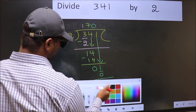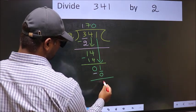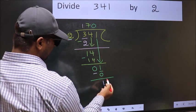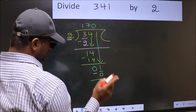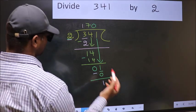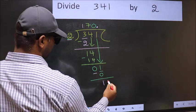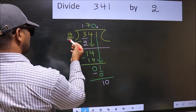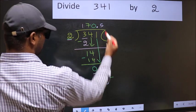Now you subtract. 1 minus 0, 1. Now over here, we did not bring any number down. And 1 is smaller than 2. So now you should put a dot and take 0. Now 10. When do we get 10 in 2 table? 2 fives, 10.